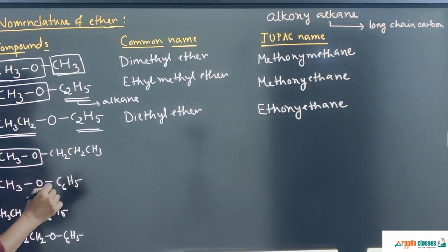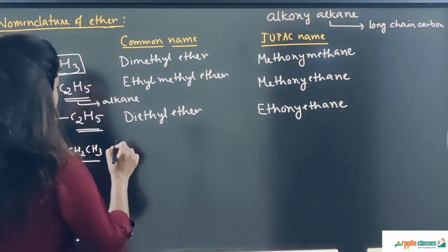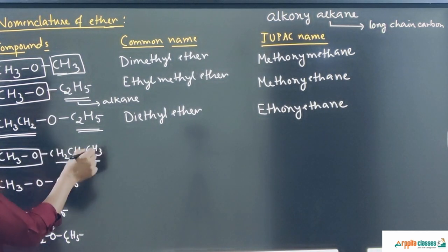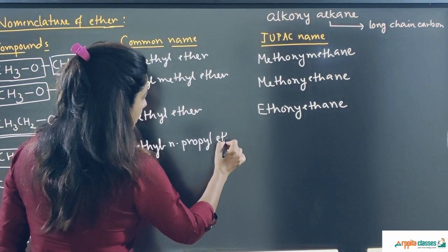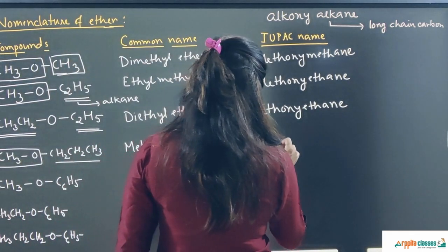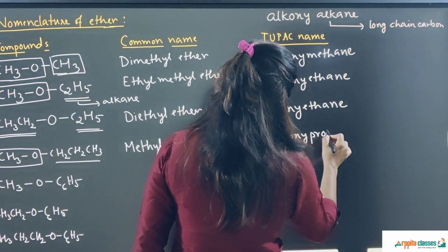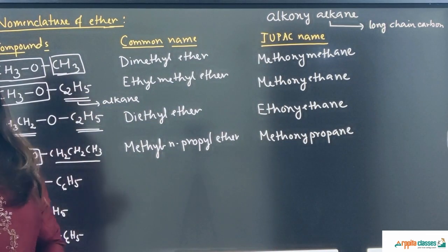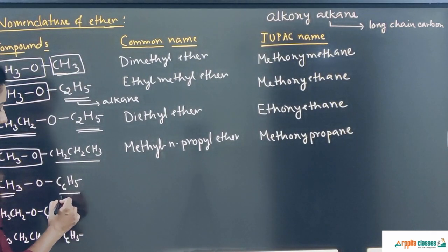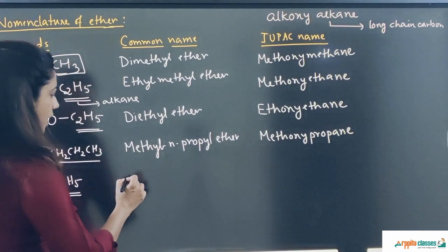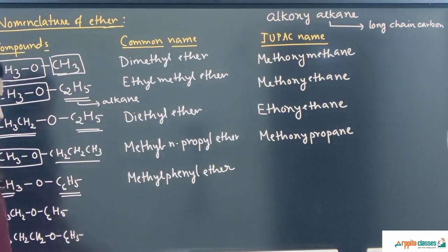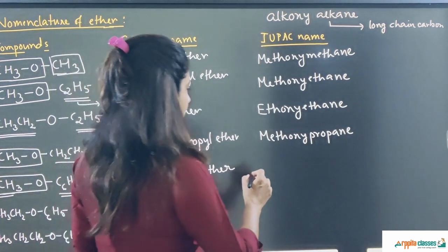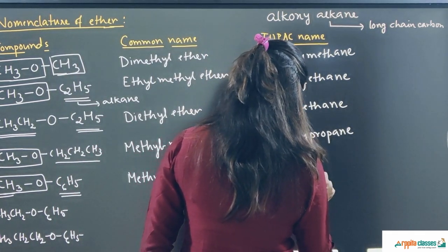For a compound with one carbon on one side (methyl, the alkoxy part) and a straight-chain propyl group on the other, the common name is methyl n-propyl ether, and the IUPAC name is methoxypropane. For the next compound, one side is a methyl group and the other side is a benzene ring (phenyl group). The common name is methyl phenyl ether, and the IUPAC name is methoxybenzene.